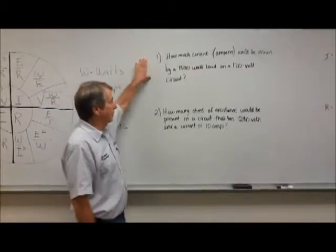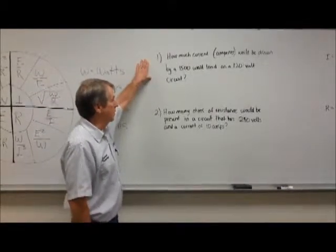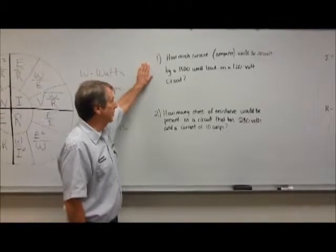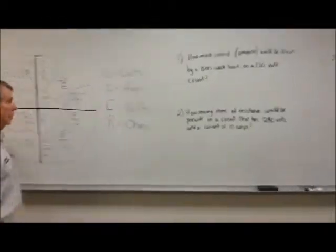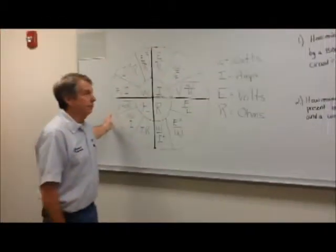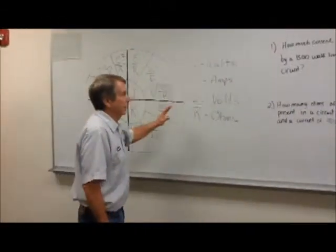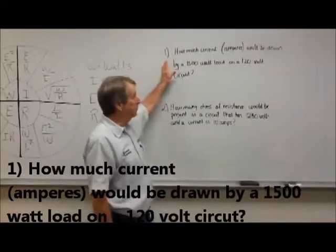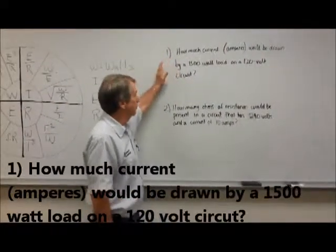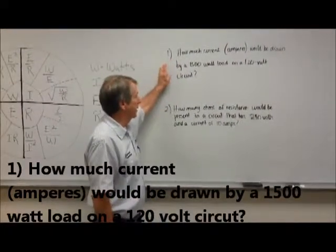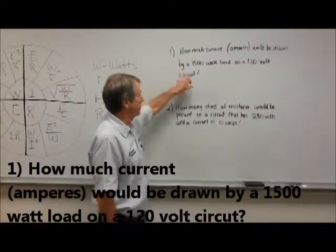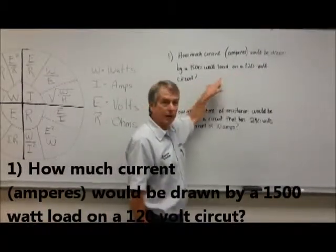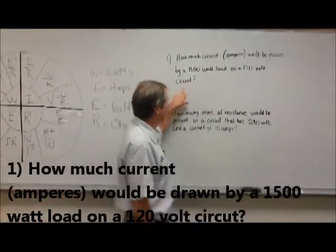We have a problem here that we are going to solve using our Ohm's law wheel. The problem is how much current or amperes would be drawn by a 1500 watt load on a 120 volt circuit.